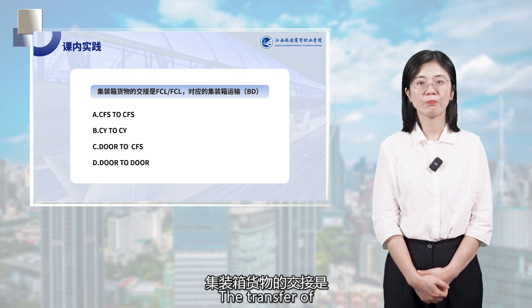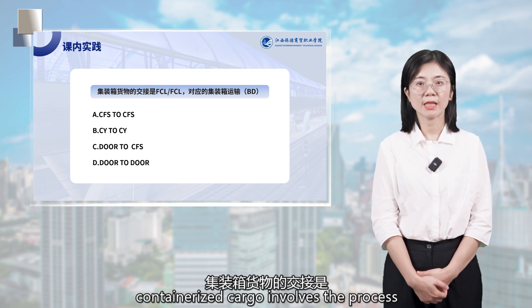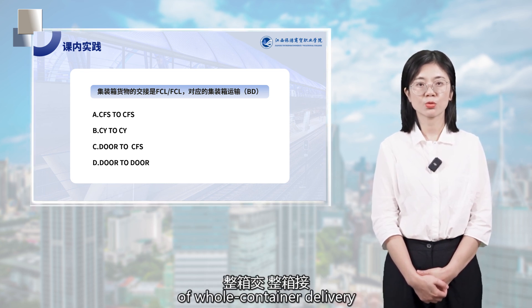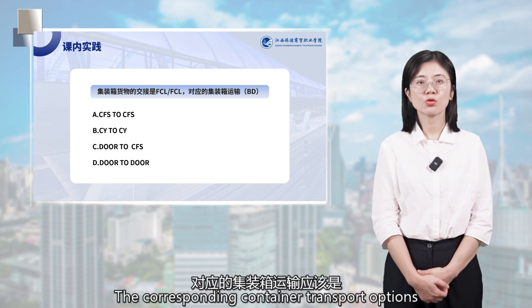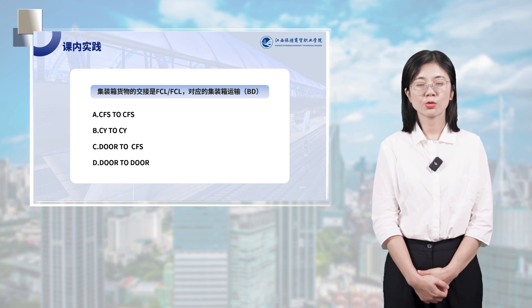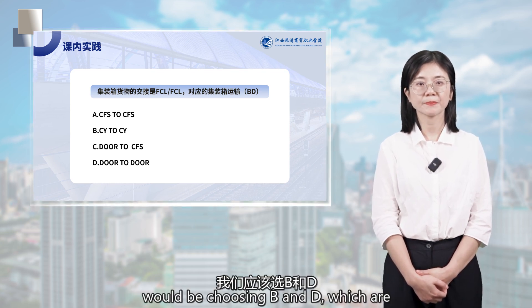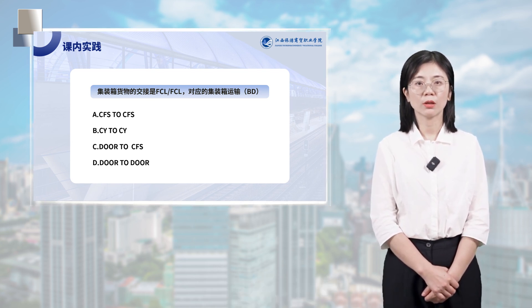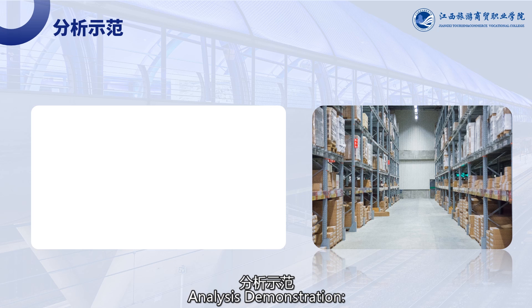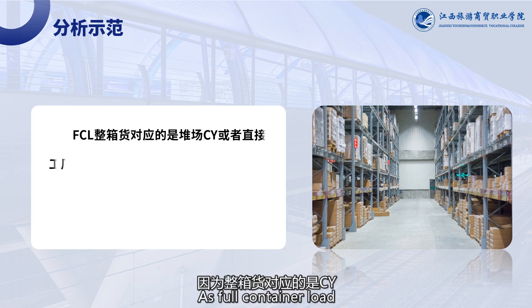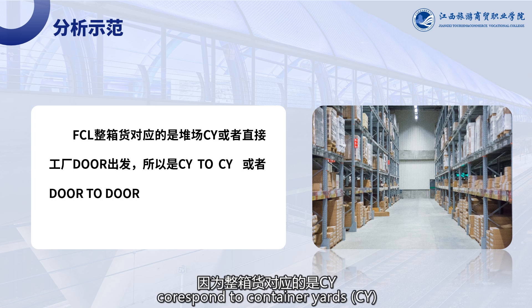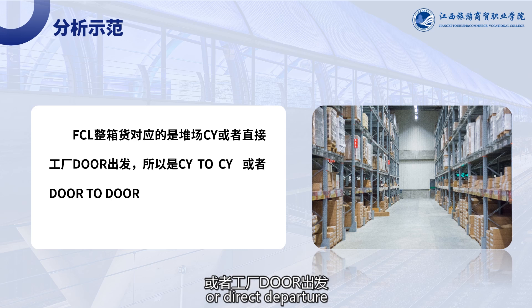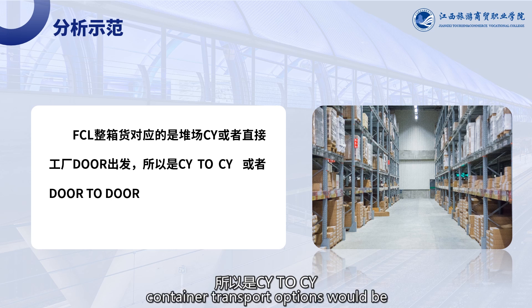The transfer of containerized cargo involves the process of whole container delivery and whole container reception. The corresponding container transport options would be choosing B and D, which are CY to CY or door to door. Analysis Demonstration: As full container load corresponds to container yards (CY) or direct departure from the factory's door, the appropriate container transport options would be CY to CY.